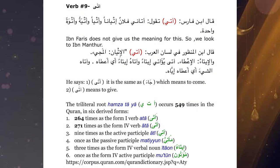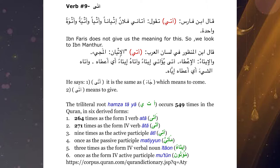Ibn Faris, rahmatullahi alayhi, he says: taqoolu al-arab atani fulanun itiyanan wa atyan wa atyatan wa atwatan wahidatan. In this case he doesn't even do what he normally does of breaking down the verb saying 'al-hamzatu walta'u walya'u.' He doesn't even do that — he gives us the different noun forms for it and that's it.